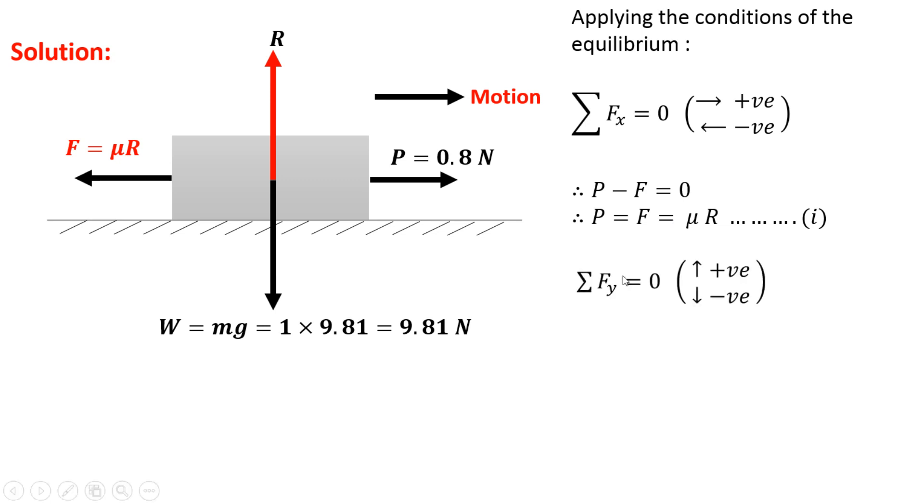Now apply another condition of equilibrium. That is summation of forces in y direction is equal to 0. Upward forces are considered as positive, whereas downward forces are considered as negative. So R is acting in the upper direction, so it is positive. Whereas W is acting in the downward direction, so it is negative. So R is equal to W, which equals 9.81 N.